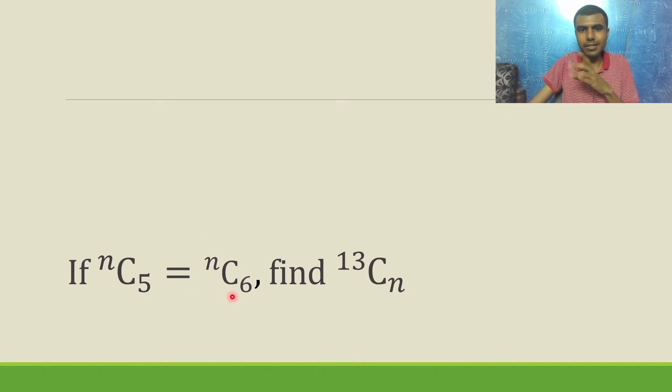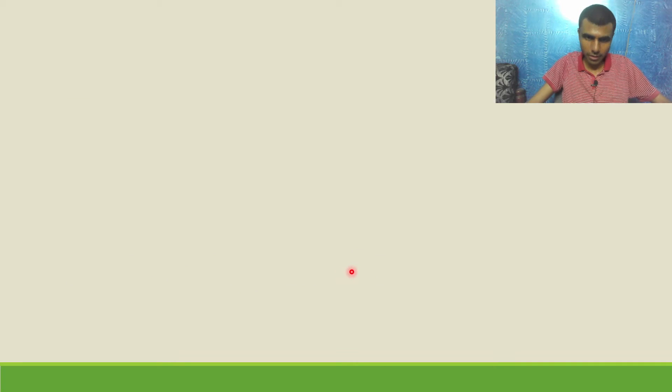First, using NC5 equal to NC6, I am going to find out N, and after that, I am going to find out 13CN.